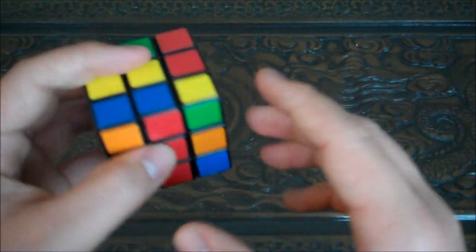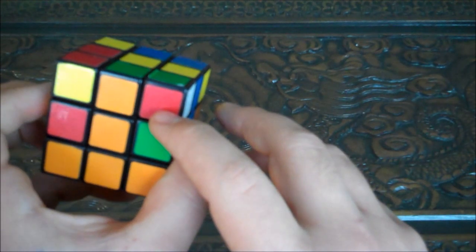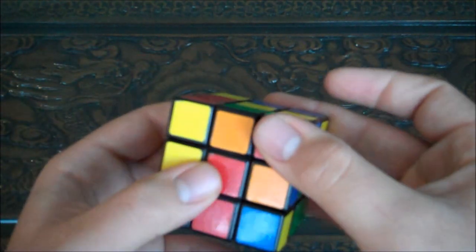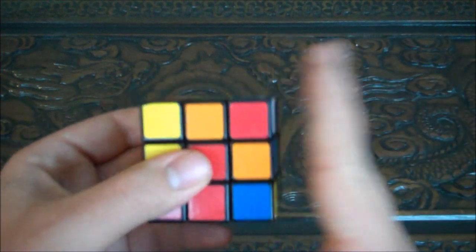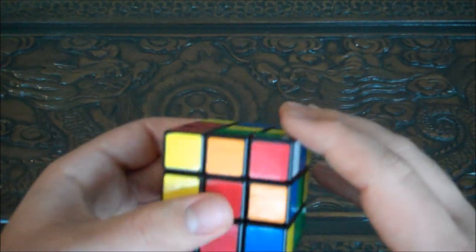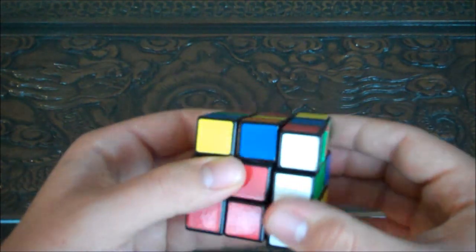Now, he's on the side, his other side is red, so you're going to match it with the red. And now he's on the right side, so you're going to go right up, top clockwise, right down.